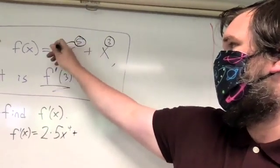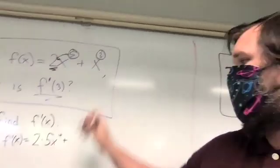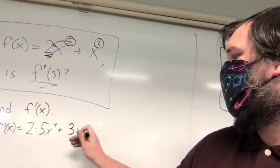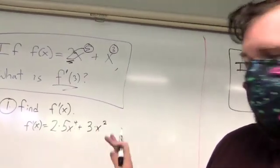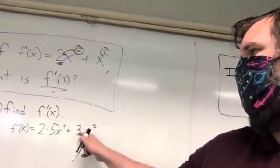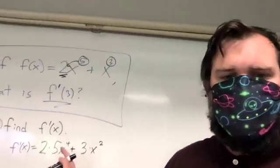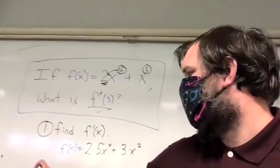What we do with the five, we bring it down and subtract one from it. And for the x cubed, we have three times x squared. Now we're not done, but this would be the first step, is to find the formula that will allow us to find f prime of anything.